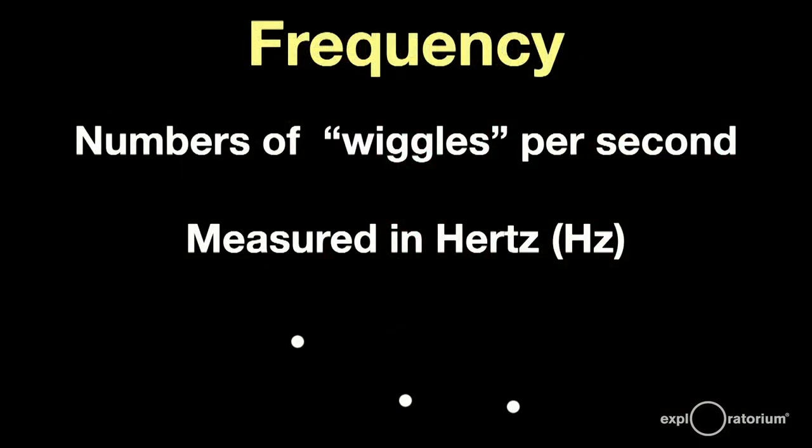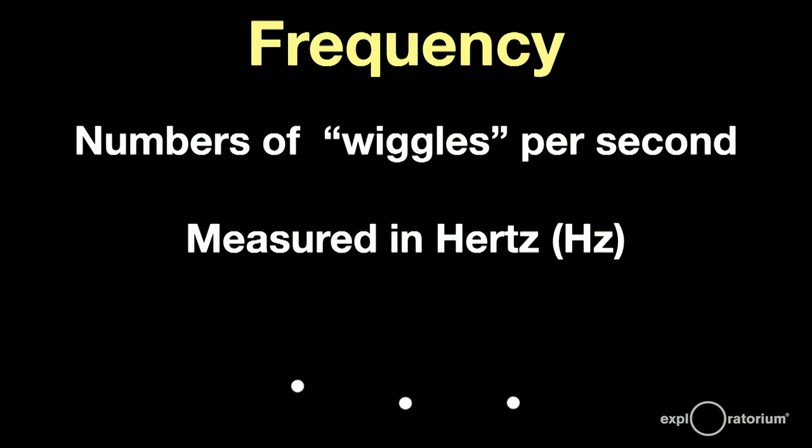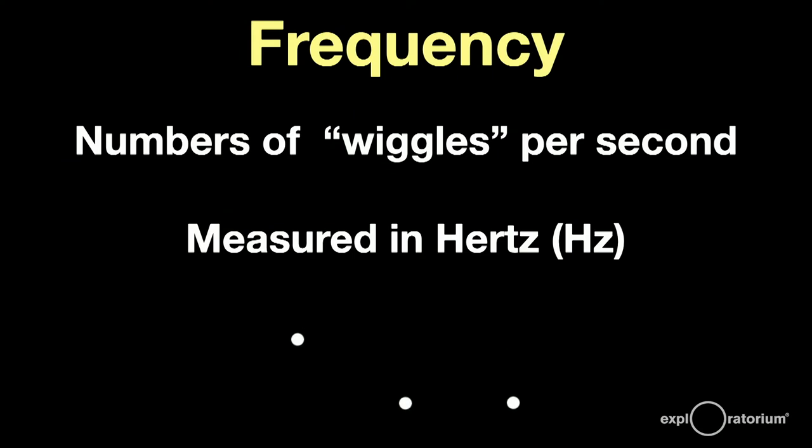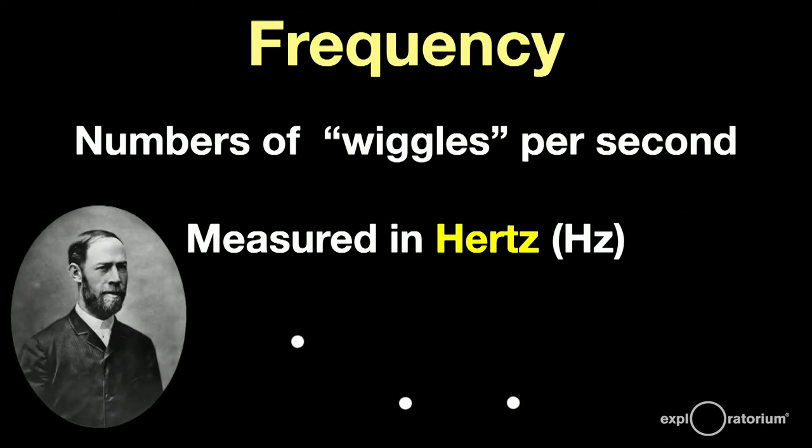Another jargon word we need to understand is frequency. The frequency is simply the number of wiggles per second. Anything that's vibrating, you can measure the number of wiggles per second, and the unit of frequency is called the Hertz, abbreviated Hz, named after Heinrich Hertz, who discovered radio waves.